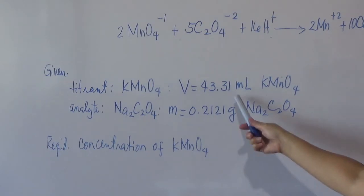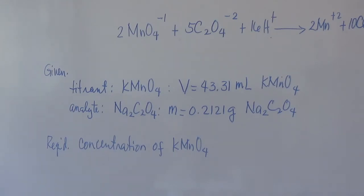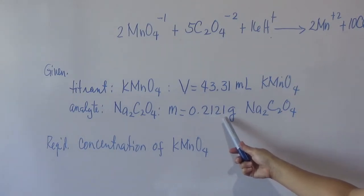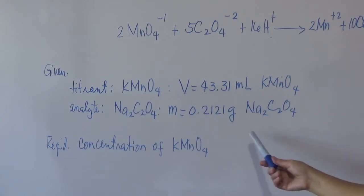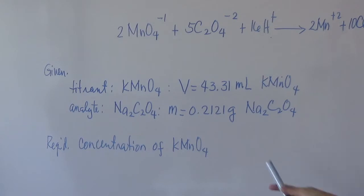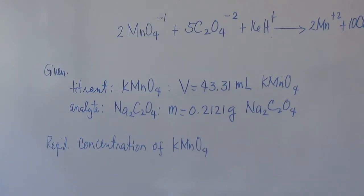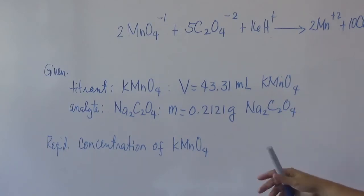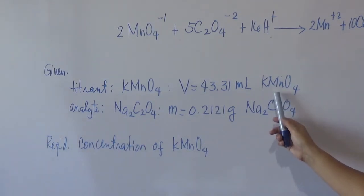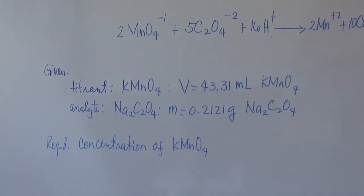It needs 43.31 mL of potassium permanganate to completely react with 0.2121 grams of sodium oxalate. Take note that oxalate here is solid, so if you are going to do titration, it will be dissolved in a certain amount of water before titrating. You will notice there is no indicator given, unlike in problem 13.4. There is no indicator because permanganate is purple in color. The endpoint here is a very light tinge — if the reaction is not yet complete, the permanganate color disappears in the sodium oxalate solution, and the endpoint is when a very light tinge is retained in the flask.